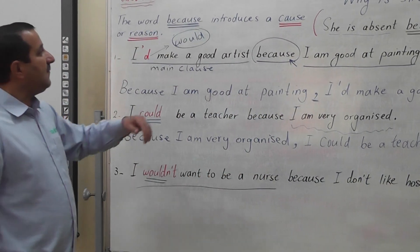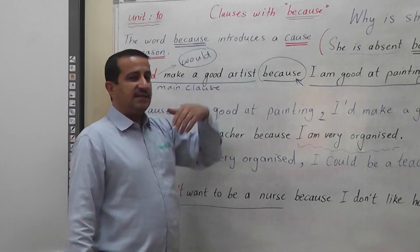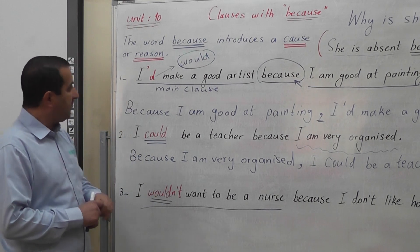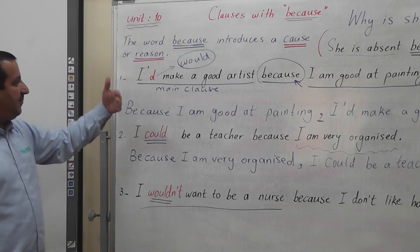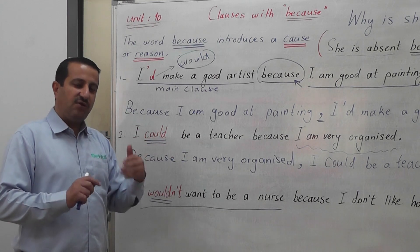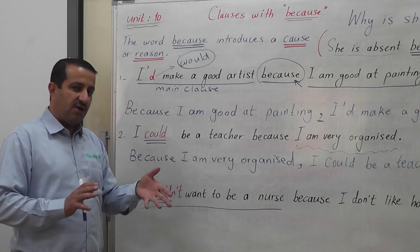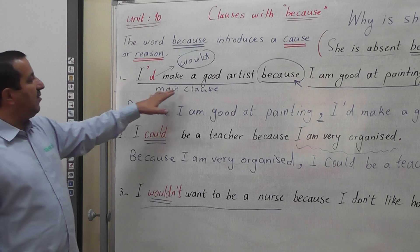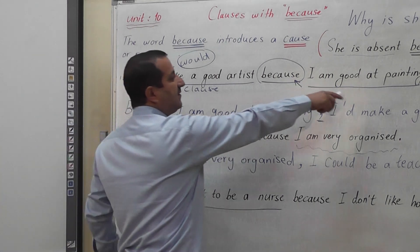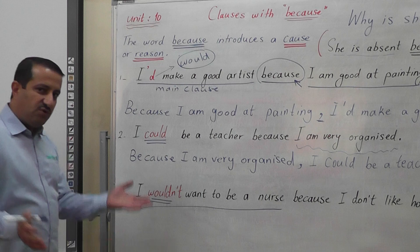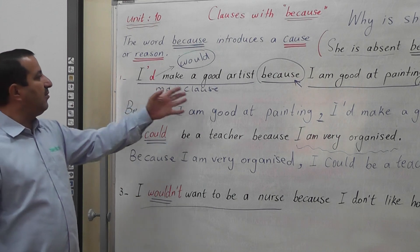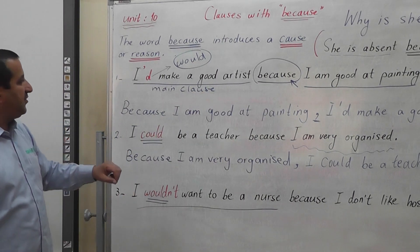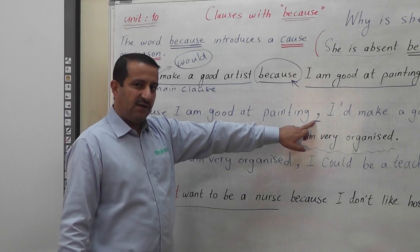In brief, BECAUSE is a conjunction that connects two independent clauses. An independent clause is a clause that stands on its own and has a complete meaning. We can start with the main clause, or we can start with the clause that begins with BECAUSE — but in that case, we have to use a comma.